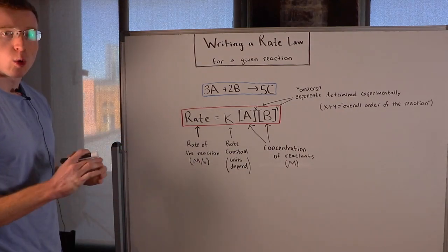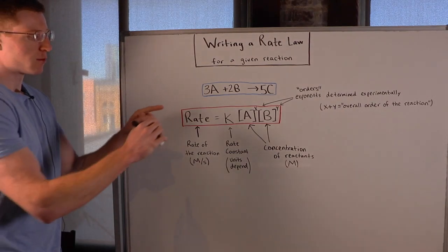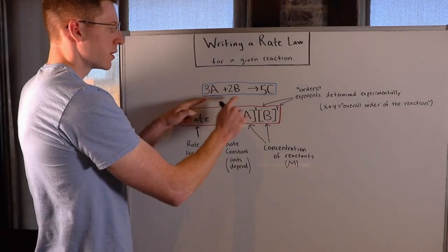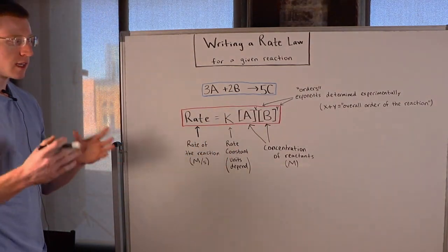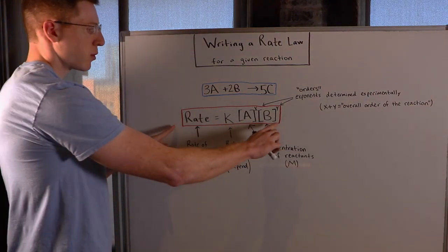Writing a rate law for a given reaction always follows the same format. I wrote up an example reaction here in blue. 3A plus 2B goes to 5C. And if I wanted to write the rate law for this reaction, it would look like what I have in red here.